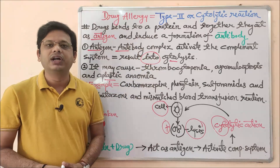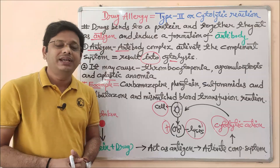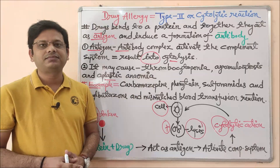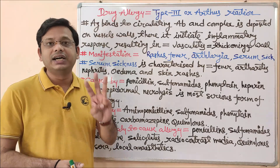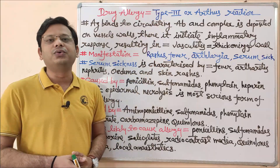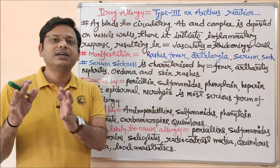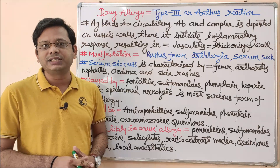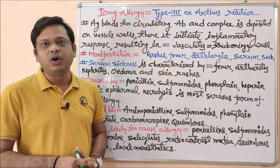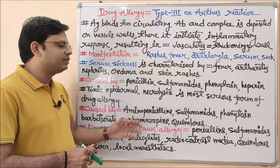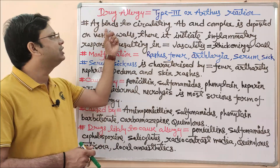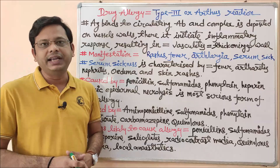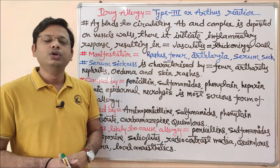This was a simple explanation of cytolytic reaction or Type 2 drug allergic reaction. Now it's time to move to Type 3 allergic response. Let's finish the topic of drug allergy with its third type, also known as Arthur's reaction or Arthur allergic reaction. The basic process: antigen binds to the circulating antibody, and the complex formed is deposited on the vessel's wall.